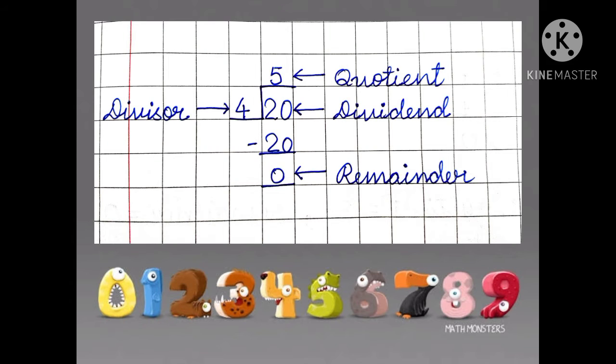This is the long division method. We have 20 divided by 4, and we get the remainder 0. The remainder is always less than the divisor. The divisor is 4 and the remainder is 0, and it is less than the divisor.